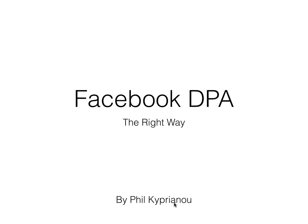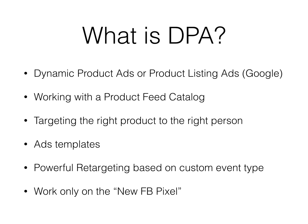Hey guys, this is Phil Kipriano from the Shopify Strategy Group. Today I'm going to talk to you about Facebook DPA, which means Dynamic Product Ads. We're going to show you step by step how to install it and everything. DPA is dynamic product ads or product listing ads — if you're doing Google, it's basically the same thing. It creates ads dynamically for you based on a product catalog.